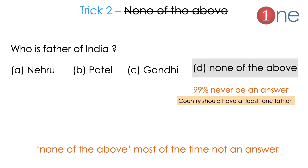Trick number two: 'None of the above' is also rarely the answer. Same question — who is the father of India? Options: A: Nehru, B: Patel, C: Gandhi, D: None of the above. A country should have somebody as the father, so 'none of the above' most of the time cannot be the answer either.